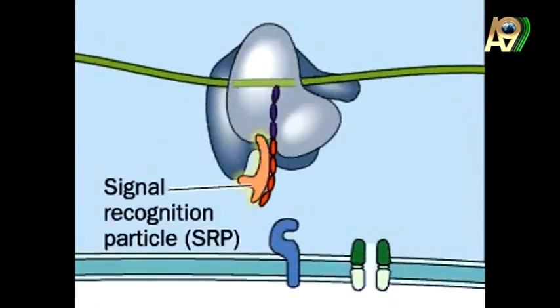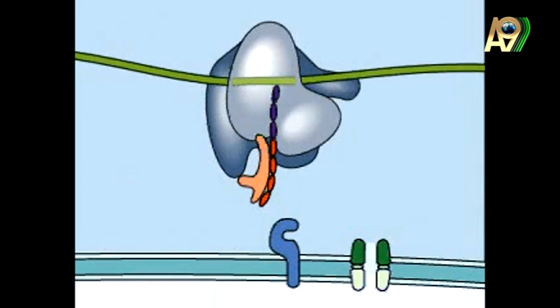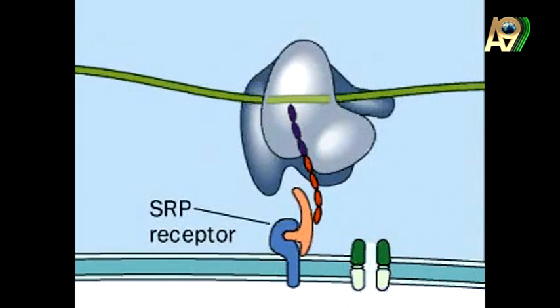If one of them is missing, there will be an error in the protein synthesis and in the modifications, so that protein will not be produced. And this causes very serious problems. When it reaches the rough endoplasmic reticulum, it doesn't settle anywhere around them — it connects to the signal recognition particle receptor.